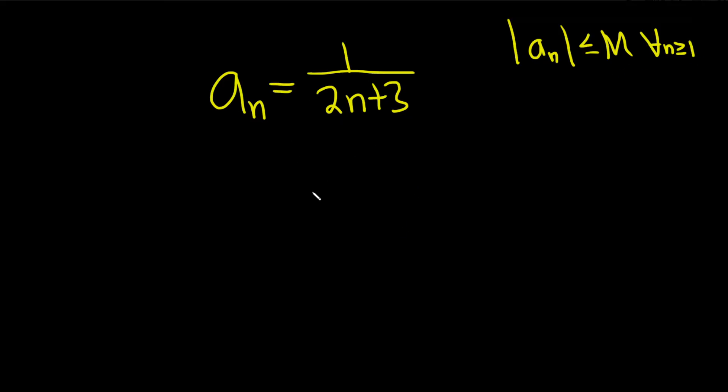So let's start by taking the absolute value of the sequence and let's just investigate what happens. So if we do that, we get 1 over 2n plus 3 and we want to show that this is less than or equal to some number.